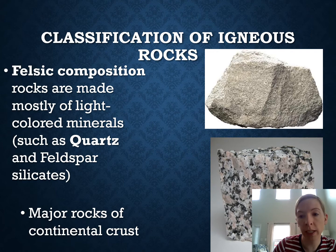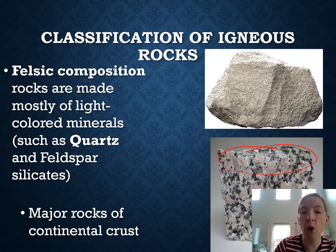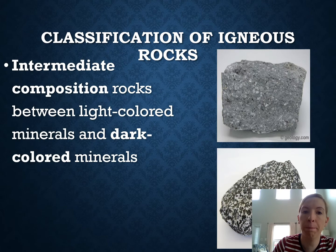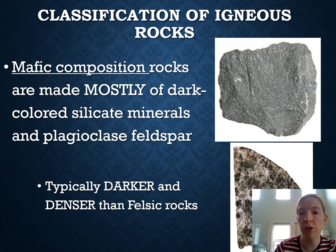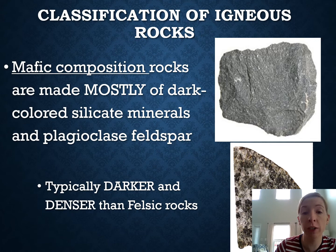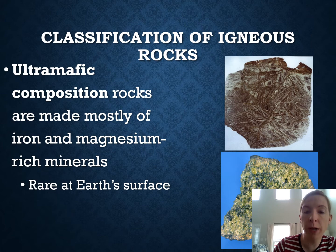Felsic means the rock is generally light in color and contains a lot of silicate minerals — quartz comes to mind. Granite is classified as felsic. Intermediate is the medium category, roughly 50/50 dark and light minerals. Mafic and ultra-mafic rocks are overall darker, with more iron and magnesium and less silica giving them that dark color. Ultra-mafic rocks are rare — not something typically found outside.